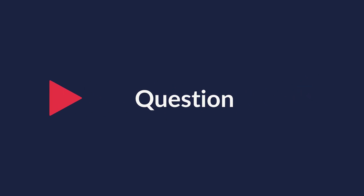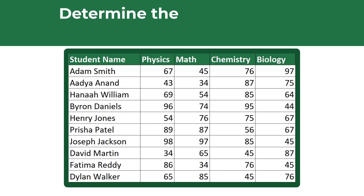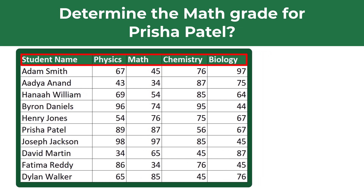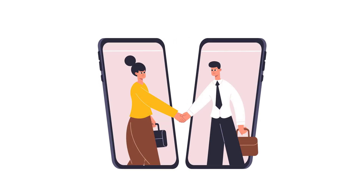Here's a very interesting problem where you need to determine a value using INDEX and MATCH Excel formulas. Specifically, you need to determine the math grade for Prisha Patel. You are presented with a range of values which includes student name, physics, math, chemistry, and biology grades, and you need to enter the formula to calculate the value. Do you see the solution? Let's move forward and solve this challenge together.